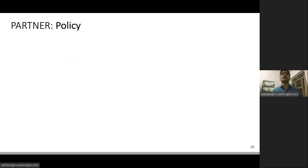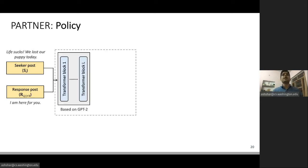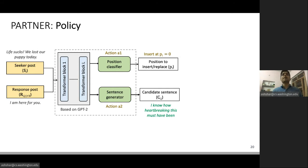This slide illustrates our policy network, which uses a transformer language model based on GPT-2. The policy network takes a seeker post and contiguous chunk of response posts as input. It passes them through the transformer language model, which performs the two actions I was talking about: identifying positions to make changes, and generating candidates to make those changes. By applying those actions, you get your final rewritten, more empathic response.